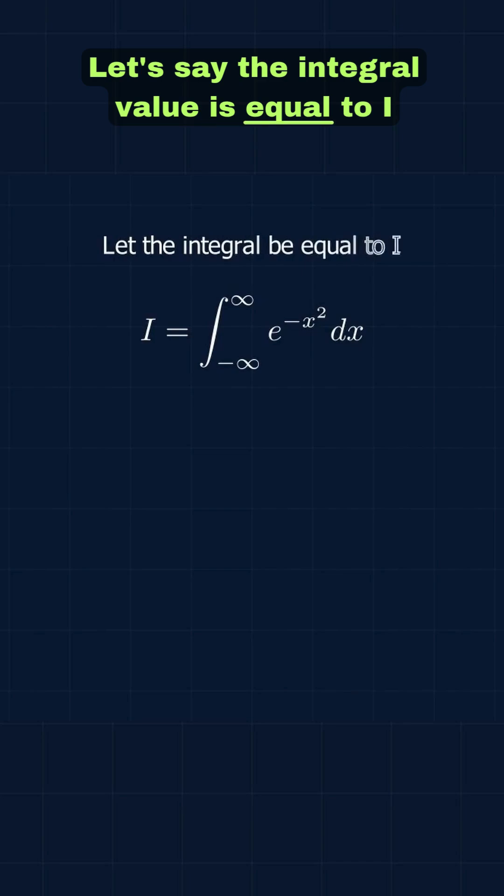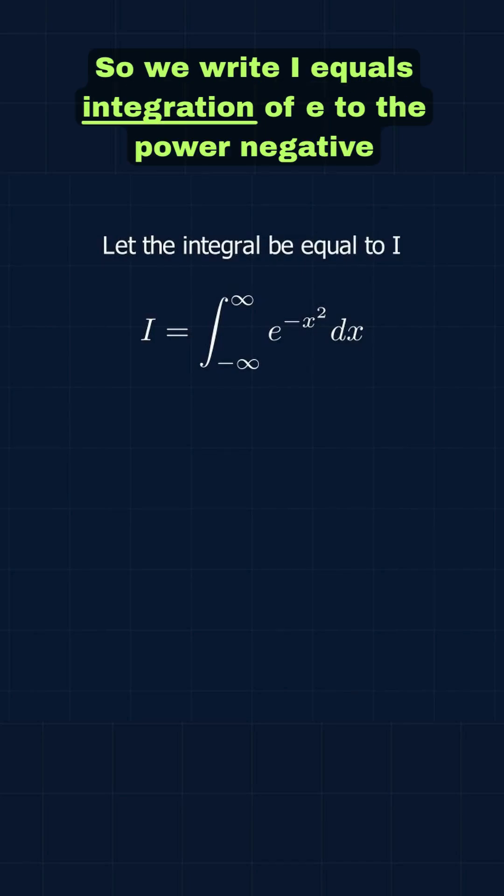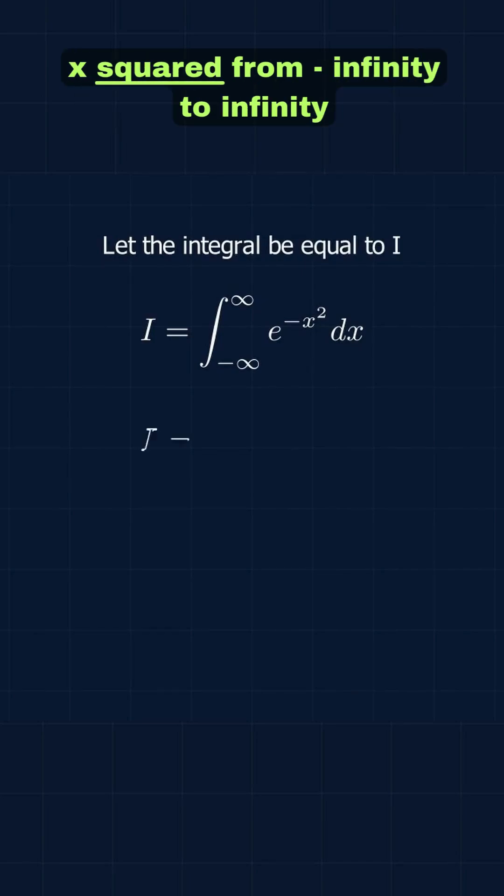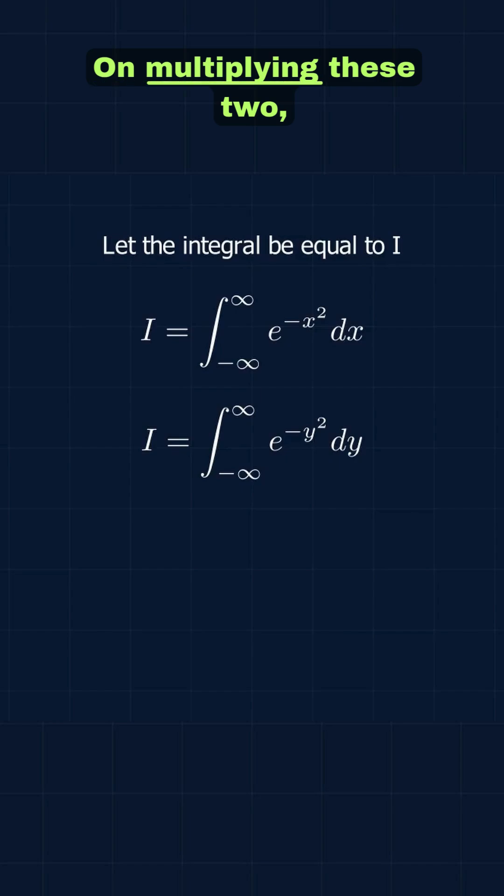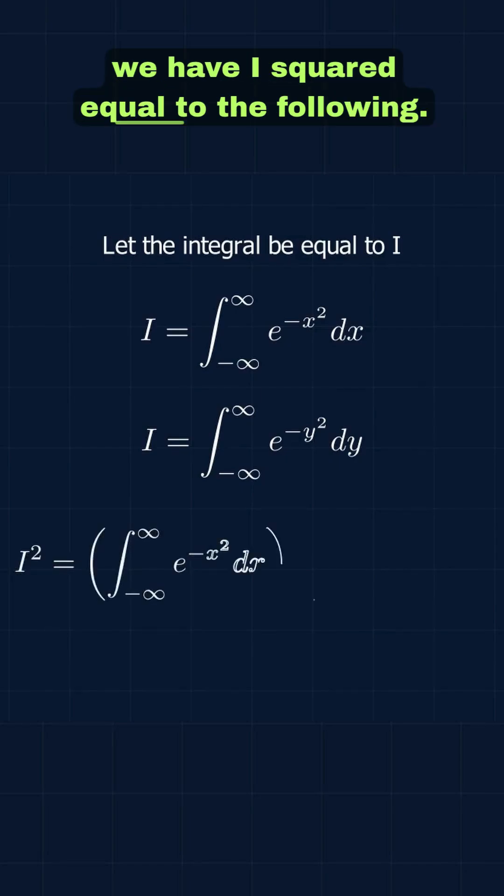Let's say the integral value is equal to I. So we write I equals integration of e to the power negative x squared from negative infinity to infinity. Now we can write the same for variable y instead of x. On multiplying these two, we have I squared equal to the following.